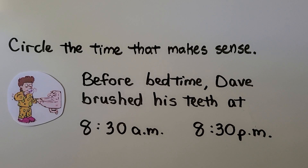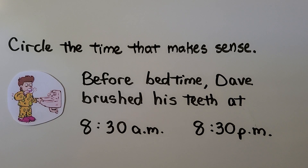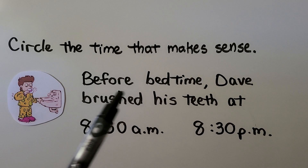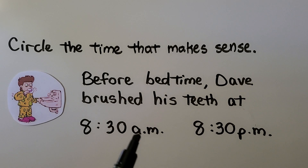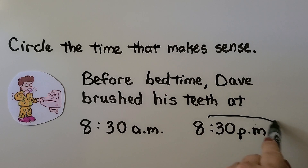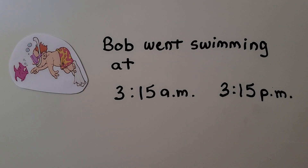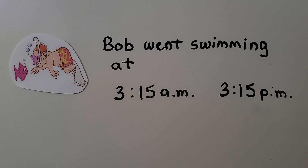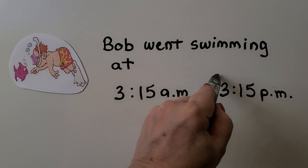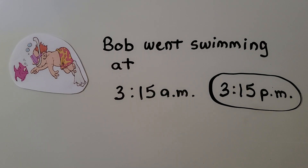Here it says circle the time that makes sense. 'Before bedtime, Dave brushed his teeth at' — we have 8:30 AM or 8:30 PM. If you said 8:30 PM, you're right. He brushed his teeth at 8:30 PM before bedtime. Next: 'Bob went swimming at' — 3:15 AM or 3:15 PM? If you said 3:15 PM, you're right. At 3:15 AM he would probably still be sleeping.